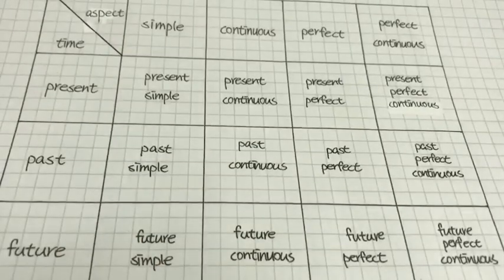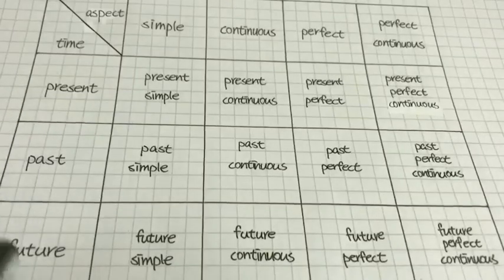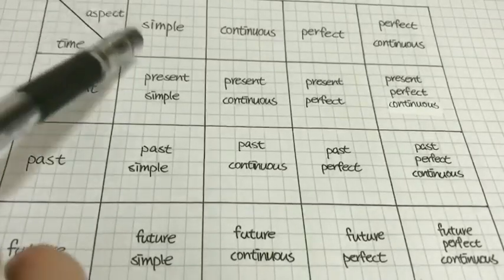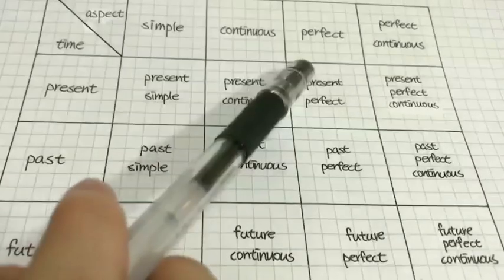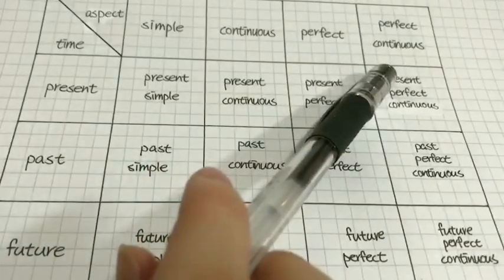In this chart, there are three types: present, past, and future, and four aspects: simple, continuous, perfect, and perfect continuous.